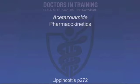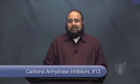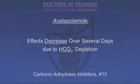Acetazolamide has lots of other good clinical uses. It's well absorbed orally, reaches maximal effect at about two hours, and that effect persists for around 12 hours. It's secreted in the proximal convoluted tubule S2 segment, inhibiting about 85% of bicarbonate reabsorption, resulting in about 45% net reabsorption. The reason we don't use it as a diuretic is because its effect decreases over several days due to bicarbonate depletion.